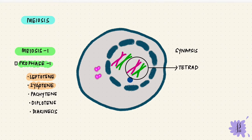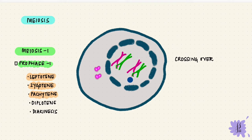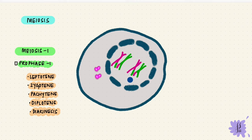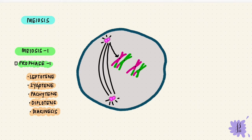In pachytene, chromatids from different pairs overlap at different points — this is how exchange of genetic material happens, called crossing over. During diplotene, the synaptonemal complex disintegrates and the points of overlap become apparent; these are called chiasmata. During the last sub-stage, diakinesis, they separate. You can see that an exchange of genetic material has occurred during crossing over. The chromatids completely condense, the nuclear membrane disappears as spindles form from the centrioles — similar to prometaphase of mitosis.